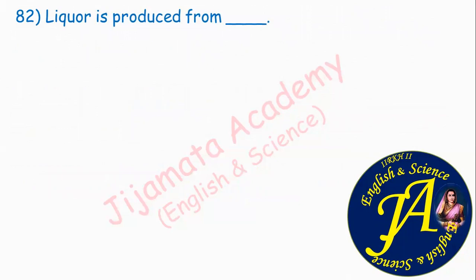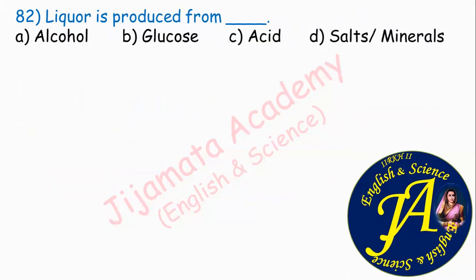Liquor is produced from dash. Options are alcohol, glucose, acid, salts or minerals. Correct answer is option A: alcohol. Liquor is produced from alcohol.